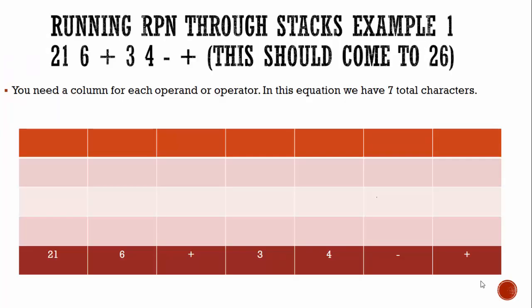Let's take a look at what we mean by that. In our first example, we have 21, 6 plus 3, 4 minus plus. This should come out to 26, and the reason we have that there is so you know what we're working to. It says you need a column for each operand or operator. We just said that was the golden rule.